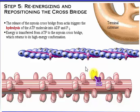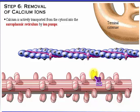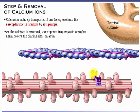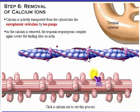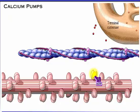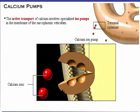In the final step, calcium is actively transported from the cytosol back into the sarcoplasmic reticulum by ion pumps. The removal of calcium causes tropomyosin to move back and cover the binding sites on actin. The active transport of calcium involves specialized ion pumps in the membrane of the sarcoplasmic reticulum — these pumps must be energized by ATP. Click the calcium ion pump to see active transport.